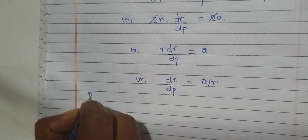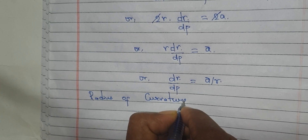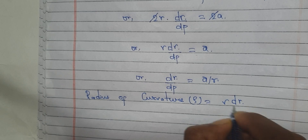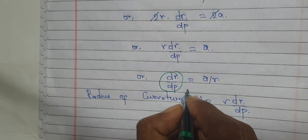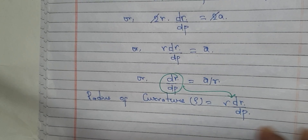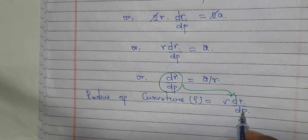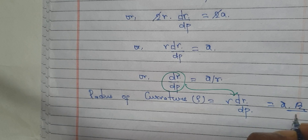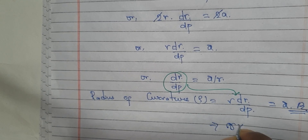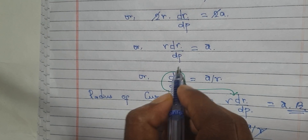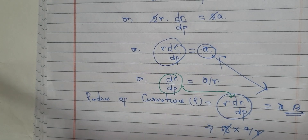So substituting into the radius of curvature formula — r·dr/dp — we get that r·dr/dp equals a. Therefore, the radius of curvature at the point equals a. The answer is a.